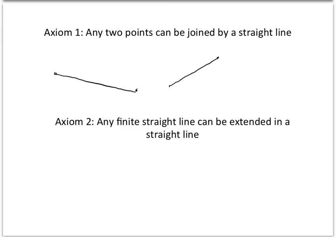The second axiom is any finite straight line. So a finite straight line is a line that goes from point to point, it ends there, it's finite. Any finite straight line can be extended in a straight line. So we could continue that straight line to make a longer straight line.